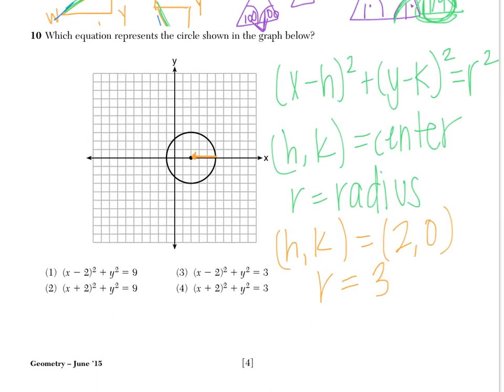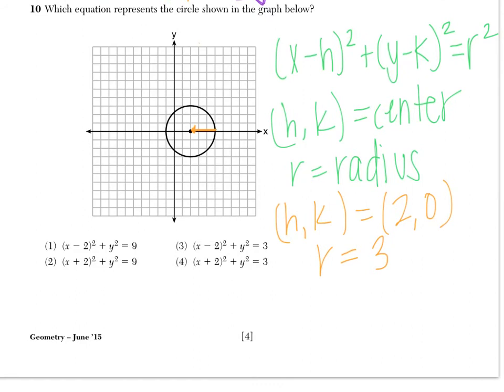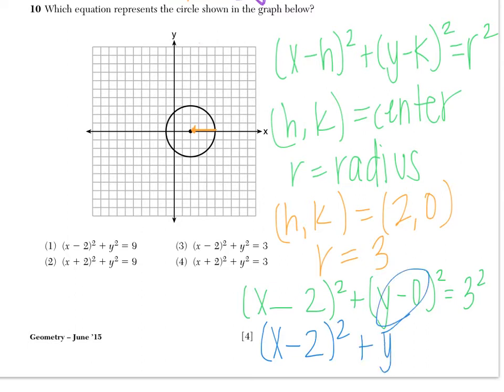So when I plug into my equation, we have X minus 2 squared plus Y minus 0 squared equals radius squared, so 3 squared. X minus 2 squared is going to have to stay the same. There's nothing more we can do with that. But if you think about Y minus 0, that just changes to Y. Anything minus 0 is just itself. And then attach the squared equals 9. 3 squared becomes 9. So that leaves us with choice 1.